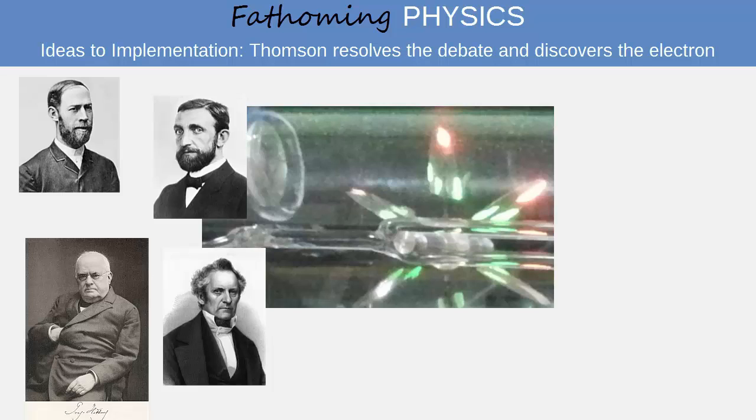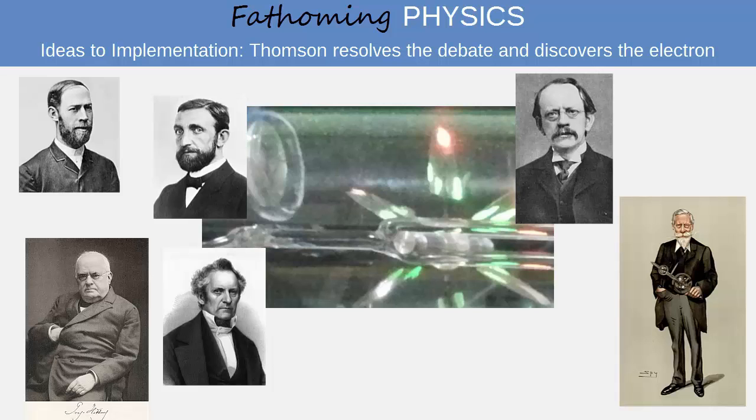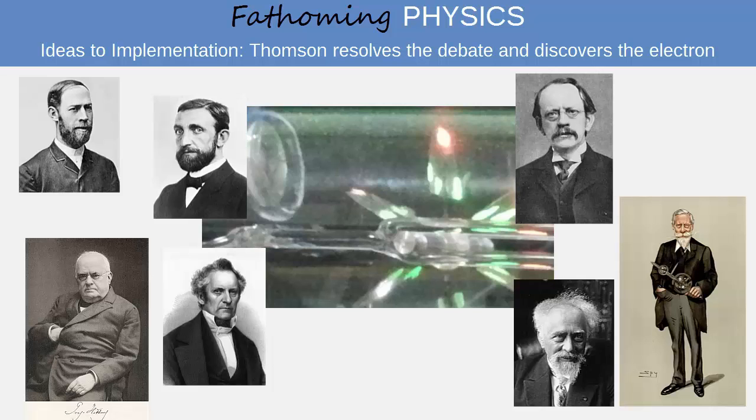In this lesson, we firstly examined the experiments of English scientists, in particular Crookes and J.J. Thomson, as well as that of French scientist Jean Perrin, which pointed towards an interpretation of the cathode rays as streams of charged particles. And finally, we see how the debate was effectively resolved by Thomson when he discovered the electron.